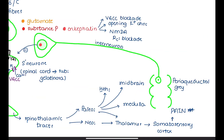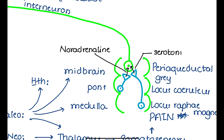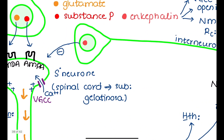Let's study the other factors causing endogenous opiate production. There are nuclei in the brainstem called the locus coeruleus in the pons and the locus raphe magnus in the medulla. Neurons of the locus coeruleus and locus raphe magnus release norepinephrine and serotonin respectively, which are excitatory neurotransmitters. This activates interneurons in the midbrain, causing further release of enkephalins and inhibiting pain signal transmission.